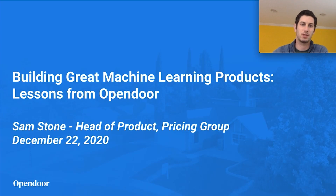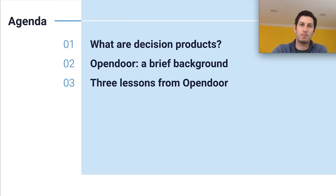Hi, my name is Sam Stone and I'm the Head of Product and Pricing Group at Opendoor. Excited to be talking to you today about building great machine learning products and some lessons we've learned. I'll start by talking about what are decision products, then give a brief background about Opendoor, and then spend most of my time talking about three specific lessons about how to build better decision products.